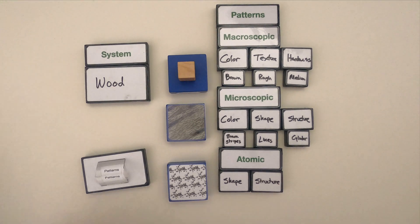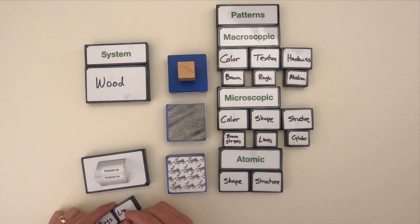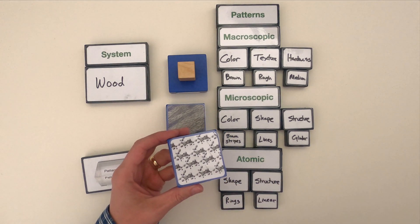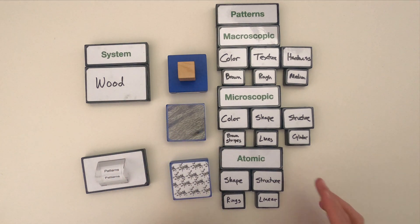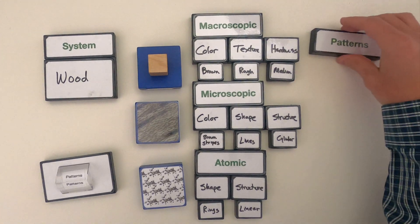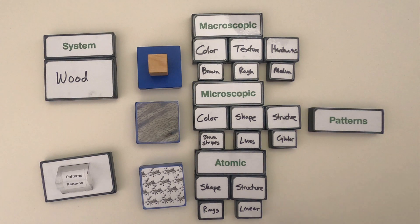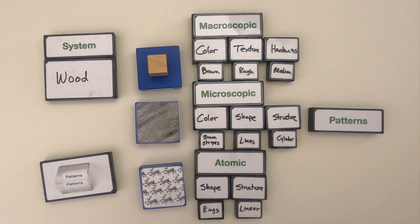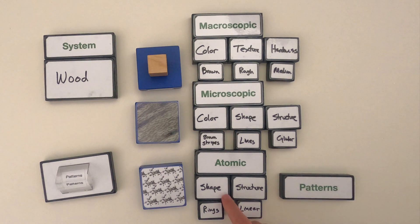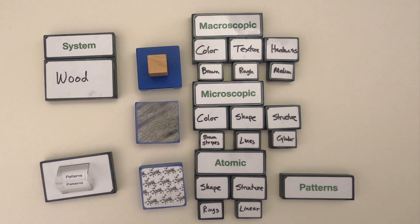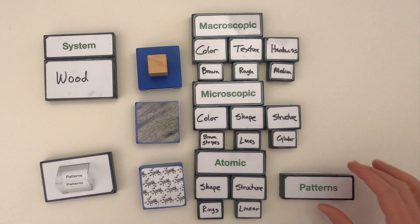At the atomic level, I see these little rings — carbon rings — connected together in a linear fashion. So I can start looking at patterns across scales. Wood feels smooth in one direction but rough in another, and the reason might be these little cylinders in the wood that run in just one direction. The rings at the atomic level are put together in lines, and maybe those lines contribute to the lines we see at the microscopic. Or maybe those rings contribute to the overall structure of the cylinders we see at the microscopic level.